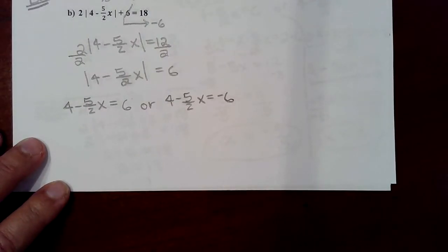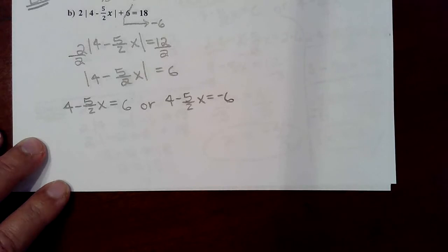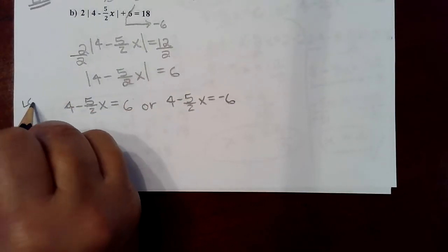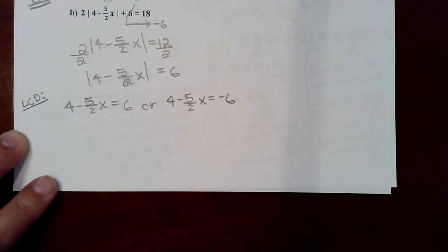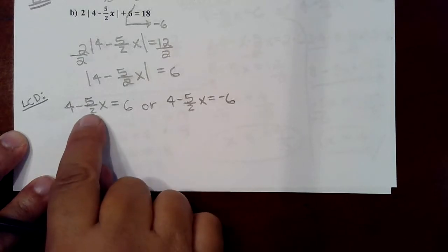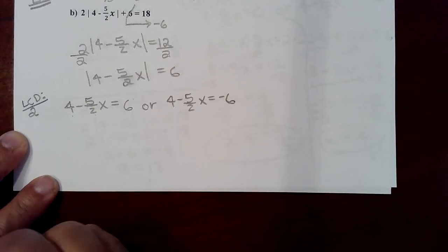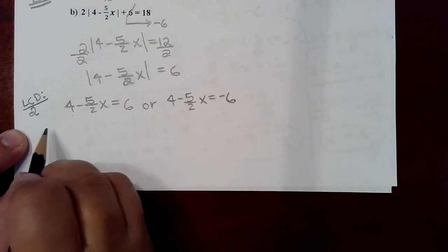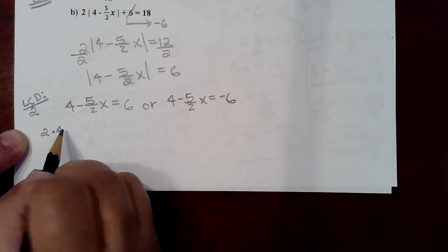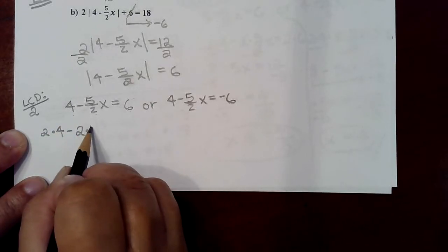We have the extra step of clearing the fraction. You can leave the fraction in and deal with it at the very last step by multiplying by the reciprocal, or you can multiply through by the LCD — that's up to you. In this case there is only one fraction, so its denominator is automatically the LCD. You multiply each and every term by 2 in order to get rid of that fraction — you can't just multiply the fraction itself, you have to multiply every term.